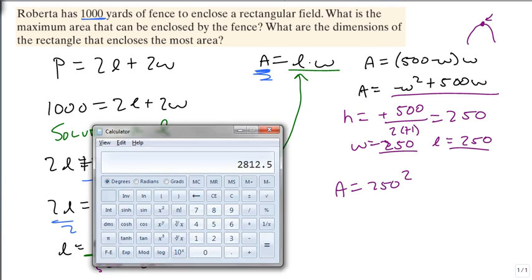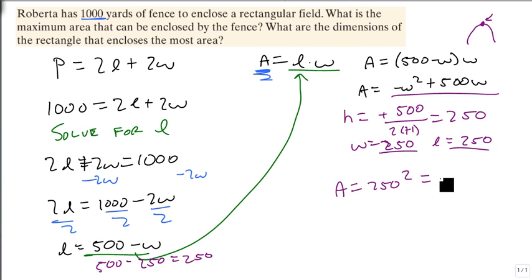So we grab our calculator again. And we get 62,500 square yards. Let's keep our units correct. That's the maximum area. So this is the answer to the first question right here, which I got by finding W and L, multiplying them together to get the area.